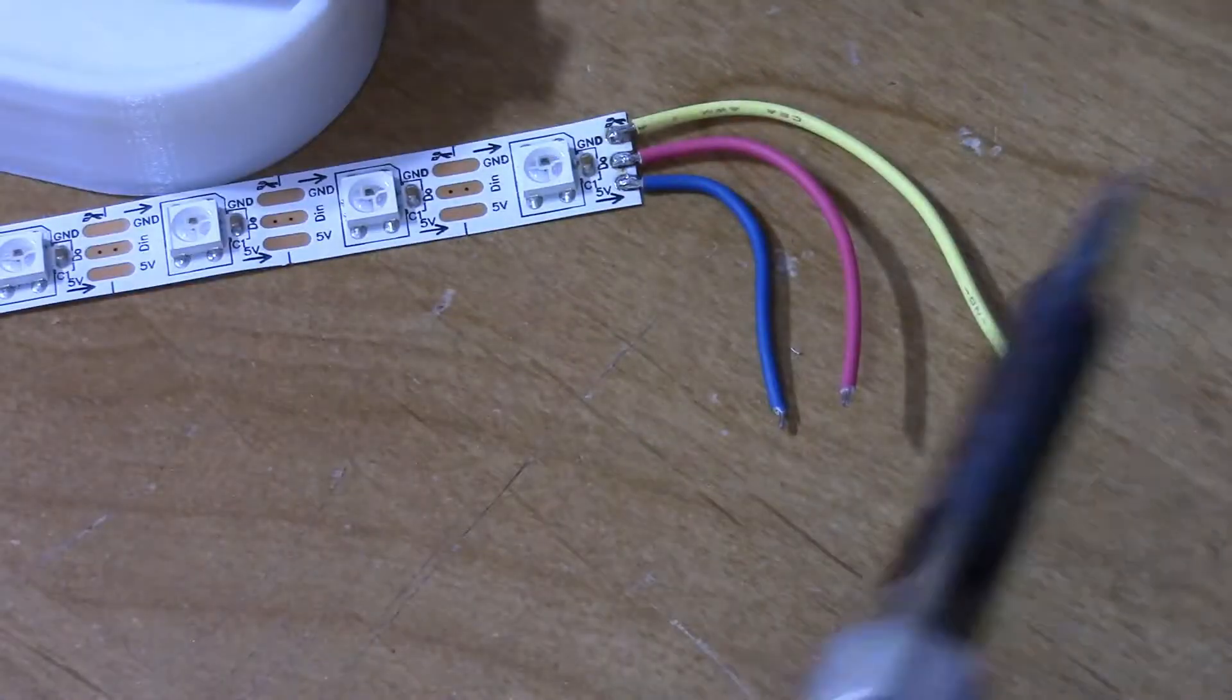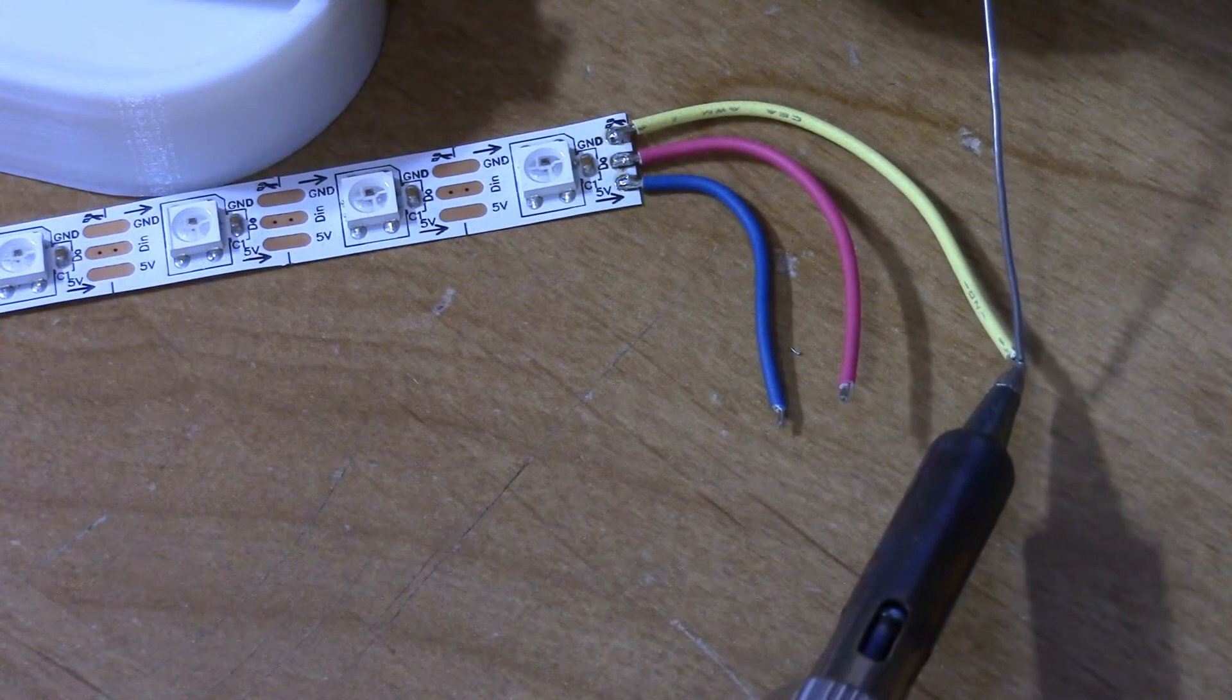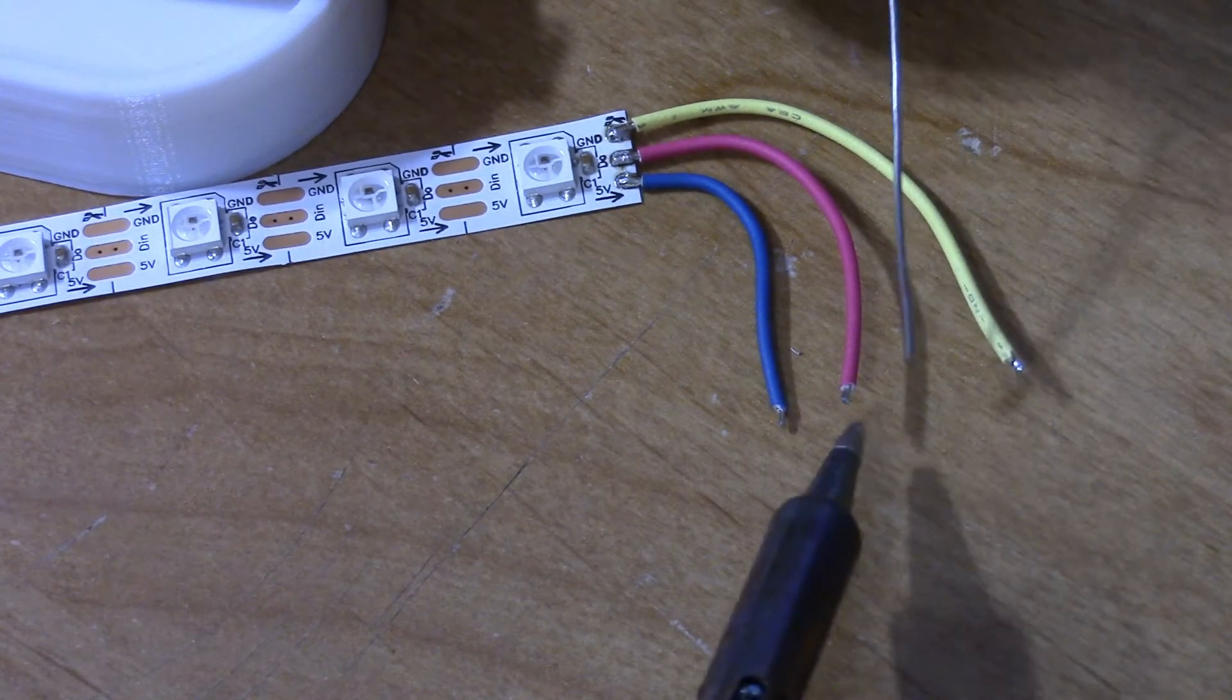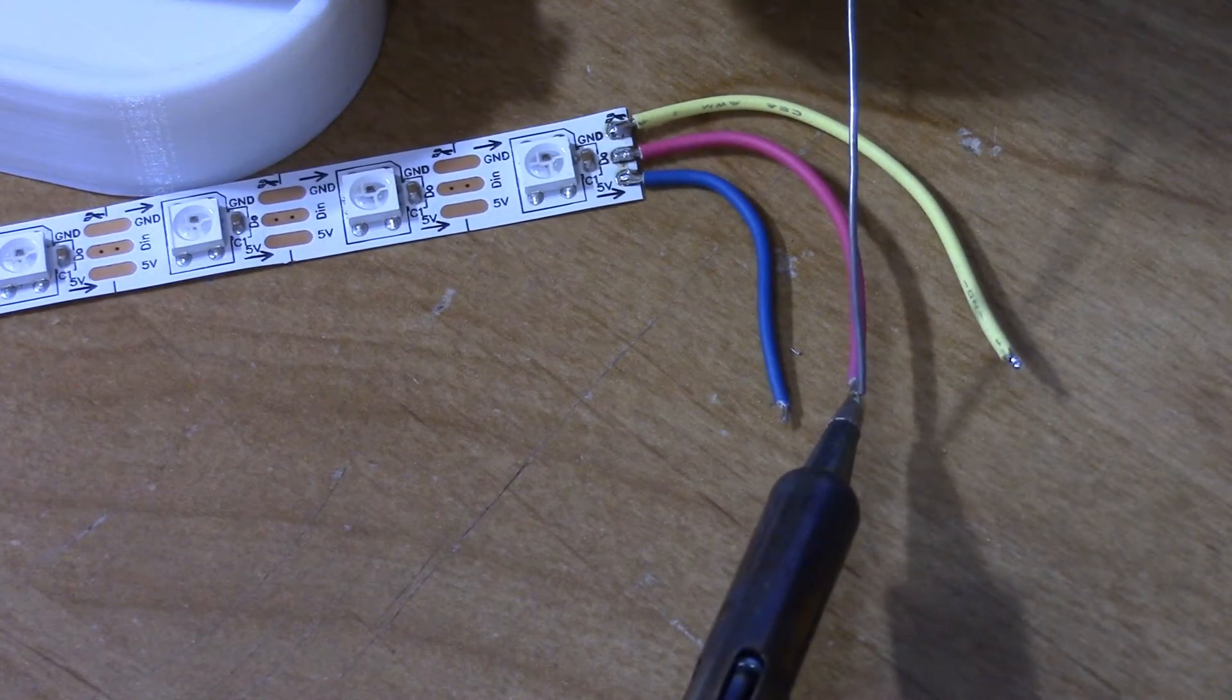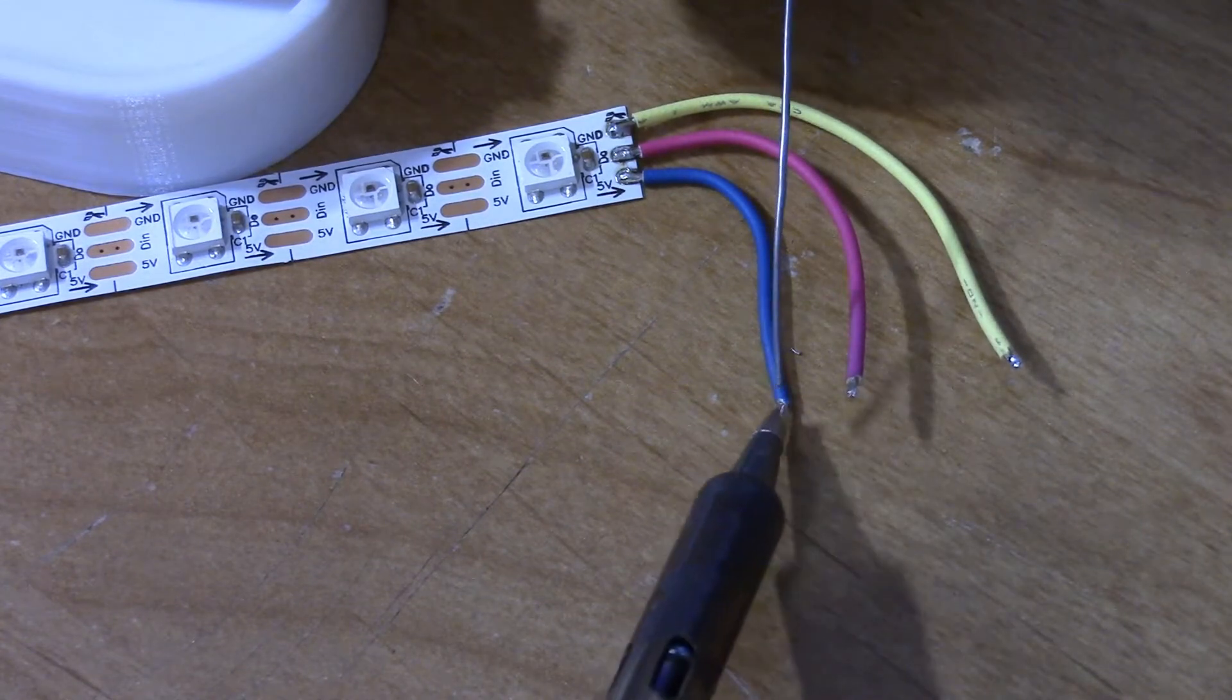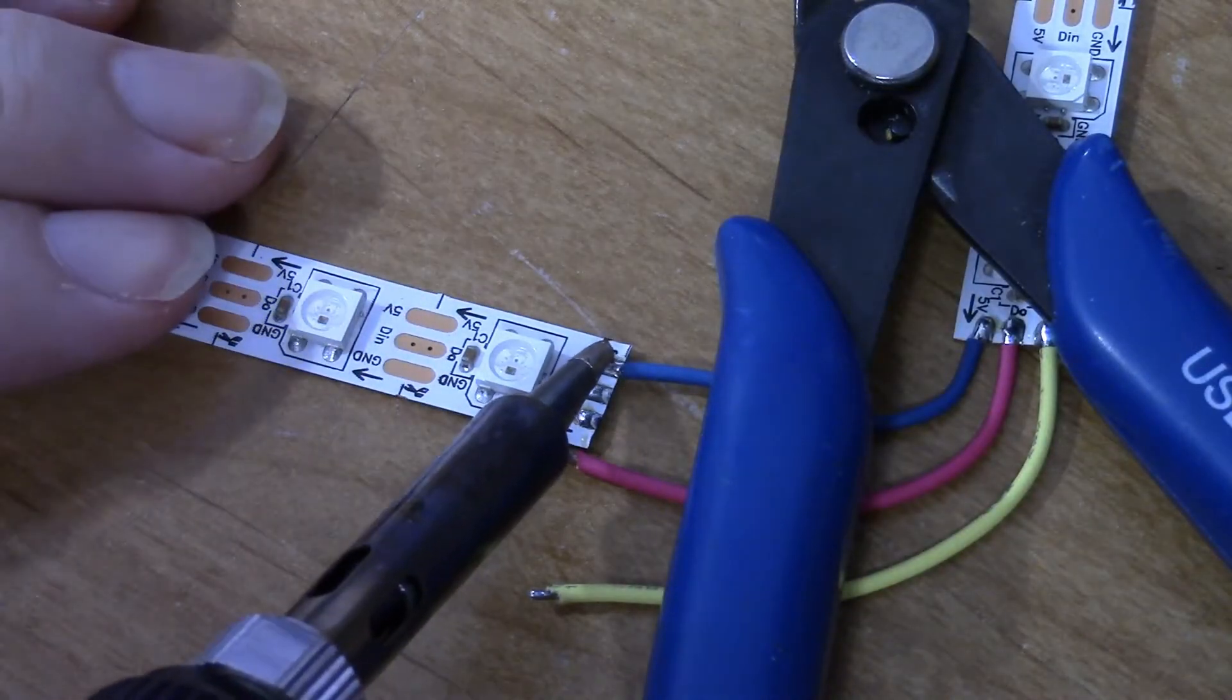Once your first set of wires are soldered on, cut and tin the new ends to connect to the next strip. Attach those wire leads to the second strip.